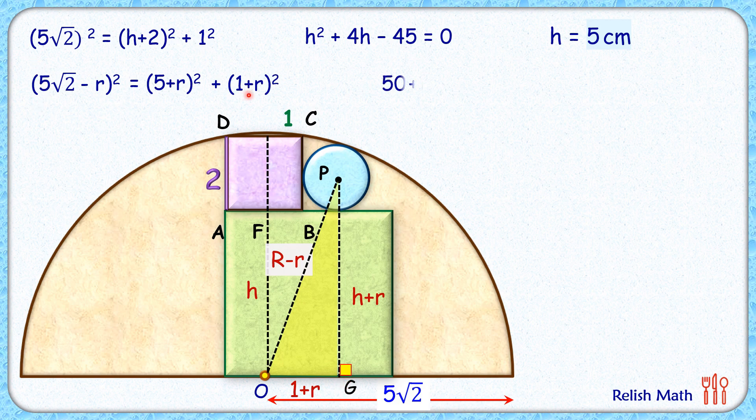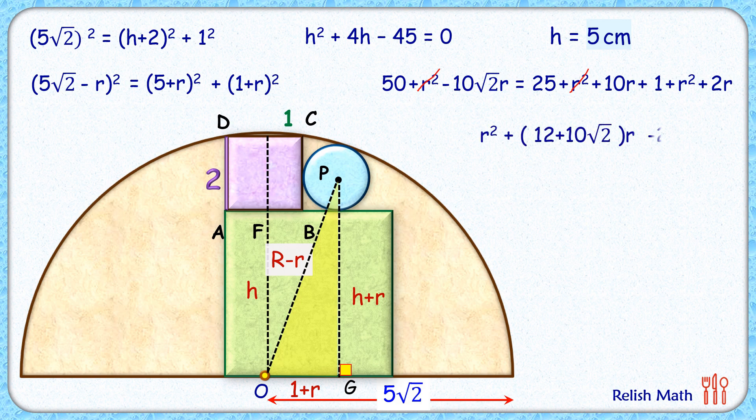Now solving it by opening the brackets on both sides. Simplifying it, both sides if we see, r² is getting cancelled down. What we are getting is a quadratic in terms of small r.